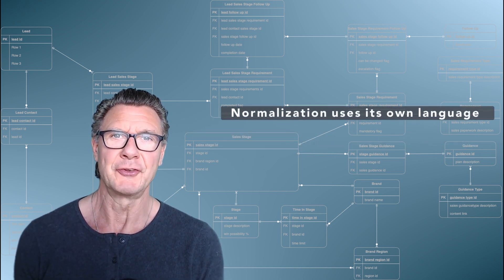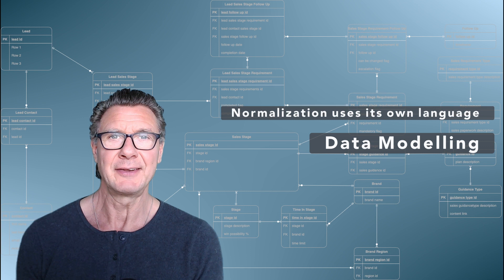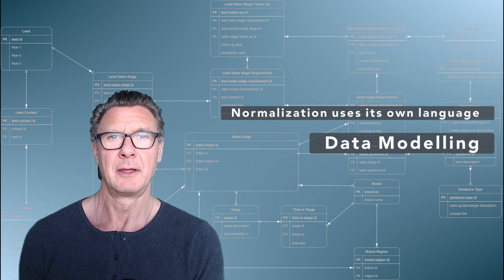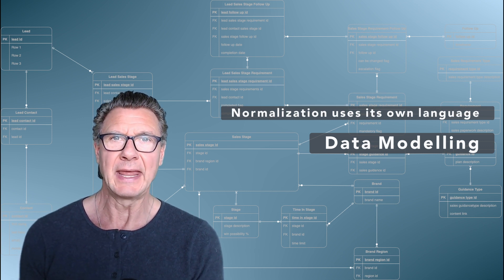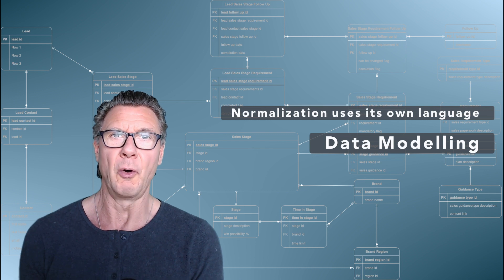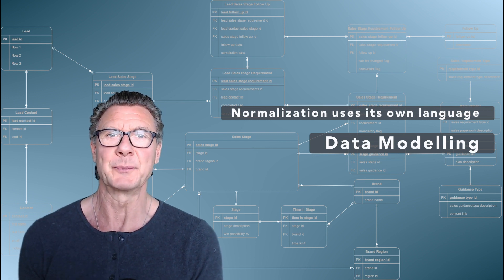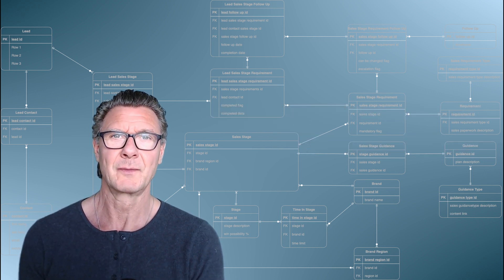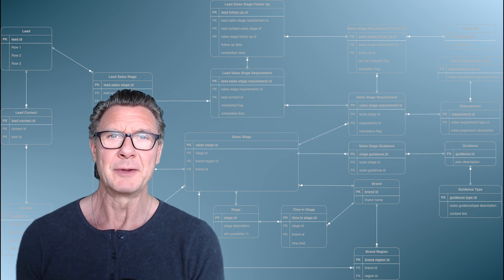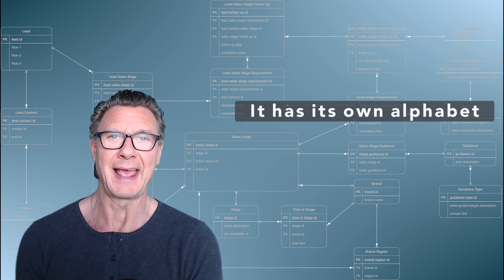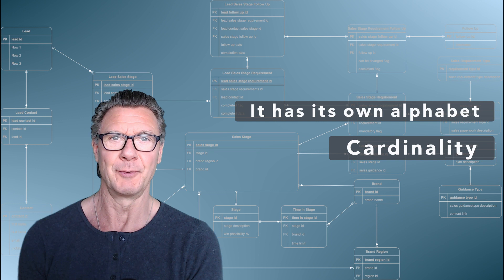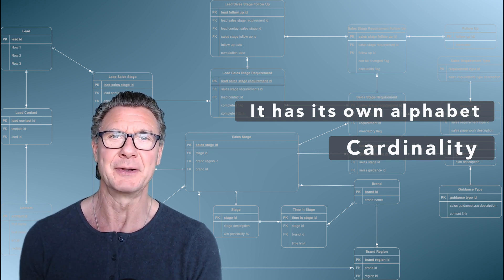It uses its own language — data modeling — to show how data is connected, and the nature of these connections or relationships to tell a story. This language is radically different to the language we normally use. It even has its own alphabet called cardinality, but this will be covered in a separate video.